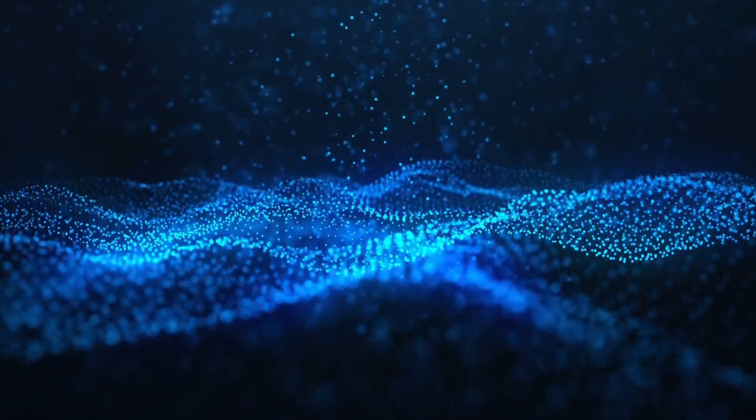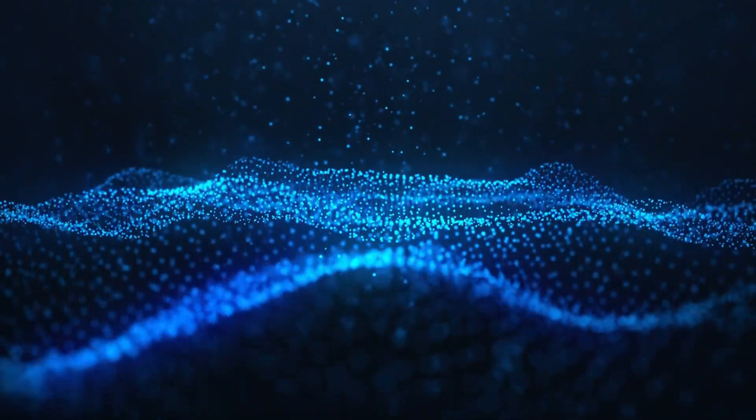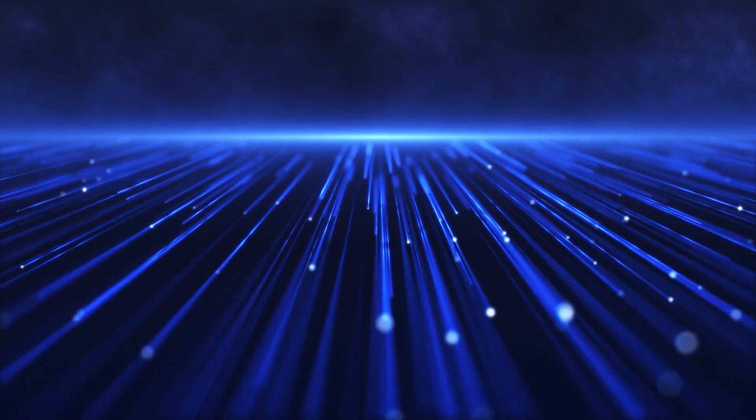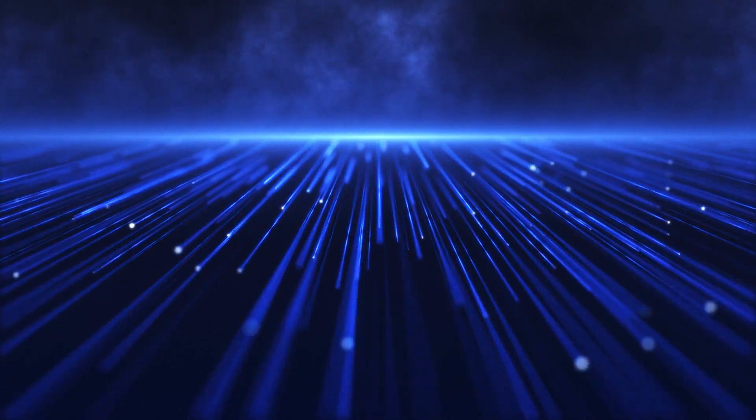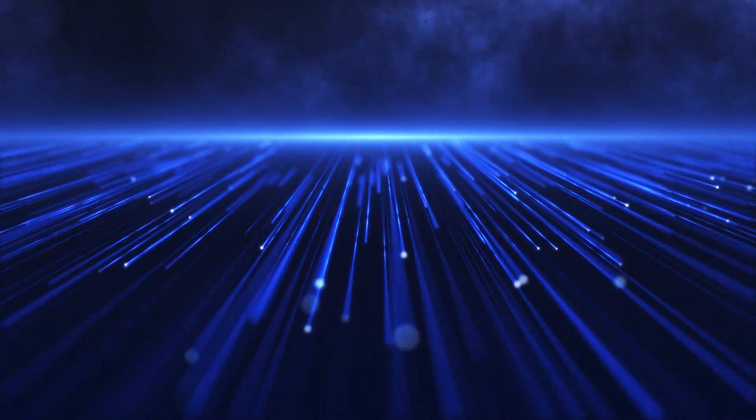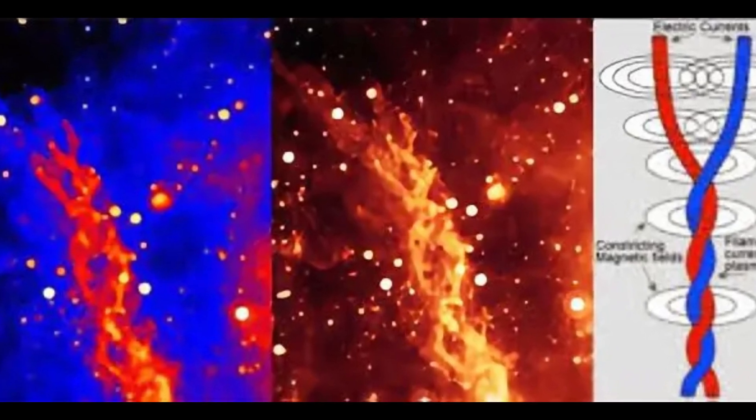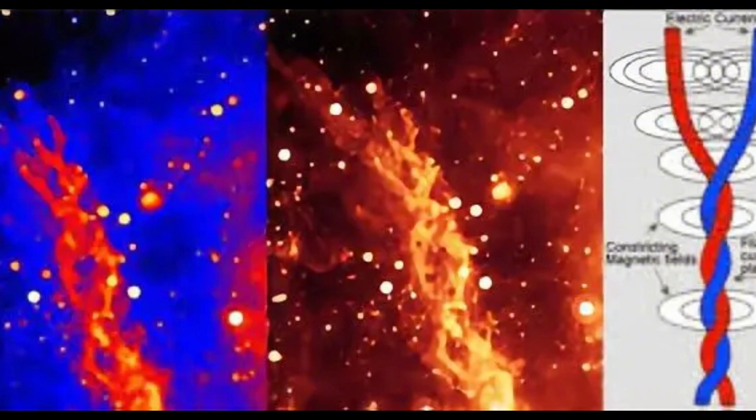So what exactly are they? Birkeland currents are streams of charged particles, mainly electrons, that flow along magnetic field lines. They come in pairs. One current flows down into the atmosphere, while the other flows back out into space. Because they carry current, they generate magnetic fields, and those magnetic fields interact, twisting around each other into a double helix. This is the same structure that we see in red and blue spirals of plasma diagrams and in telescope images of space. These are not just theoretical.